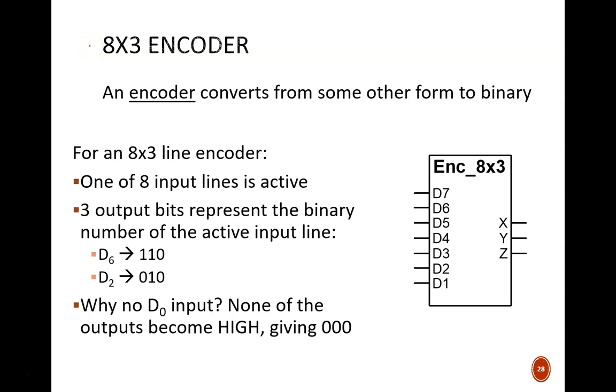An 8x3 line encoder fits the general definition of converting into binary from some other form. Here, the other form is one and only one active input line out of many options. The output will be the unsigned binary representation of the decimal number of the active line. For example,